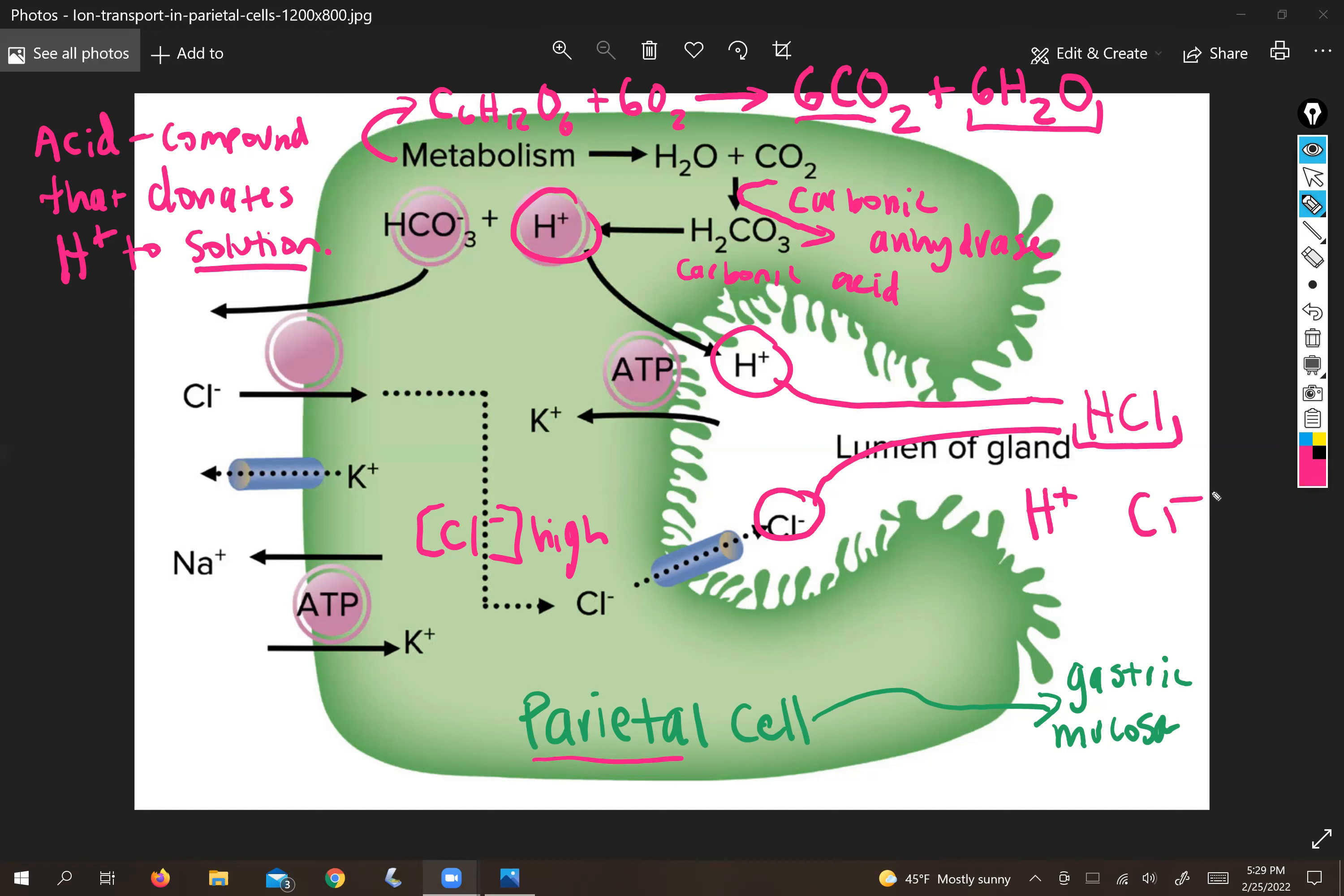So that's how parietal cells make hydrochloric acid. What they're doing is basically just saying, okay, we're already doing metabolism for other reasons, housekeeping cell maintenance reasons.